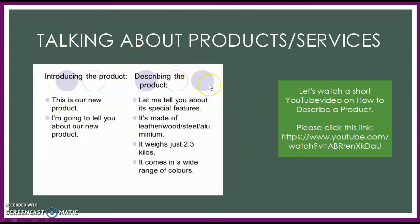When you want to describe or explain about a product or service to your friends or audience, you can use phrases such as: 'Let me tell you about its special features.' 'It is made of leather.' 'It is made of wood.' 'The weight is just 2.3 kilograms.' 'It comes in a wide range of colors,' and many more.